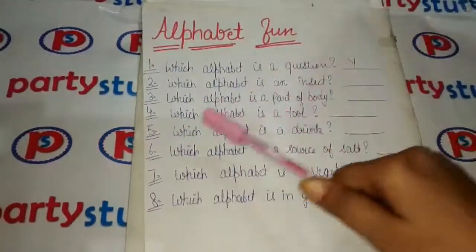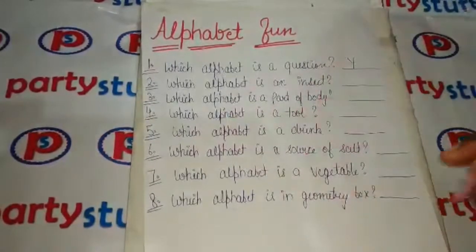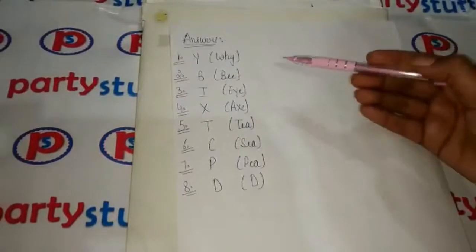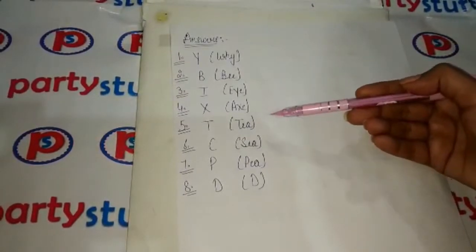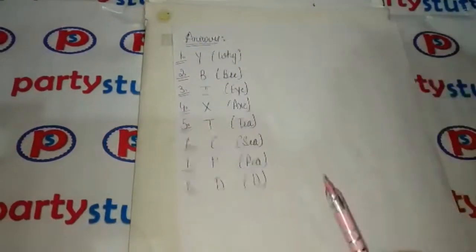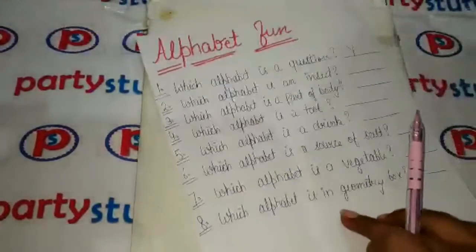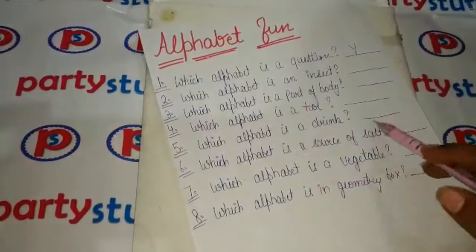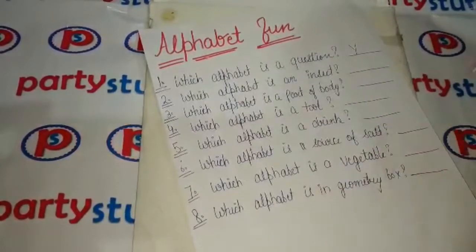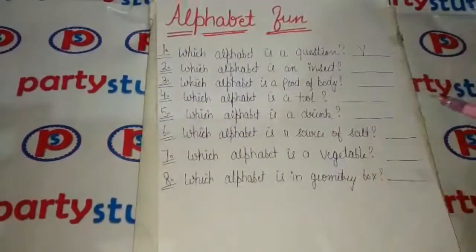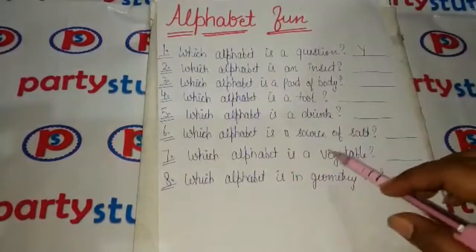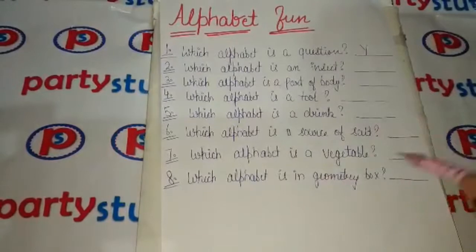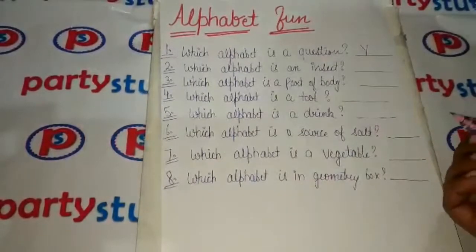Which alphabet is a tool? X — because X sounds like 'Axe'. Which alphabet is a drink? T — because T sounds like 'Tea'. Which alphabet is a source of salt? C — because C sounds like 'Sea'. Which alphabet is a vegetable? P — because P sounds like 'Pea'. Which alphabet is found in a geometry box? D — the D-shaped protractor or tool.